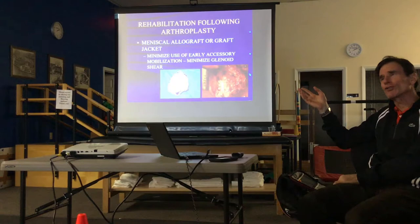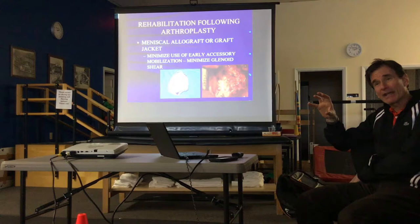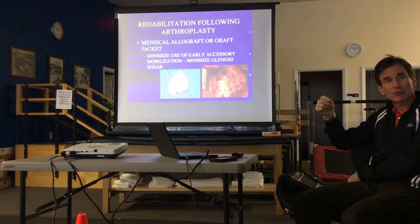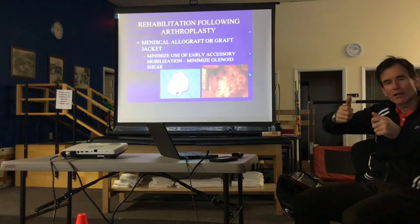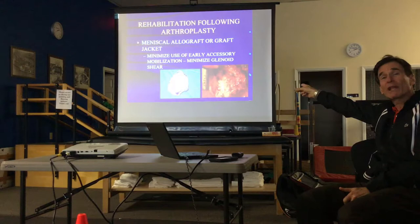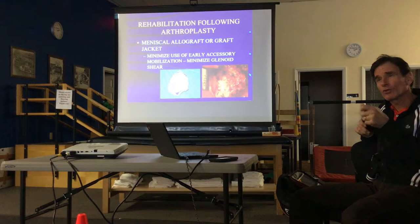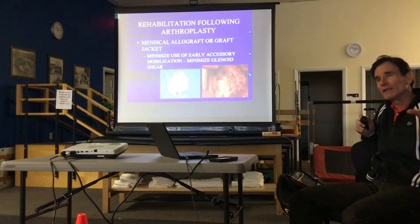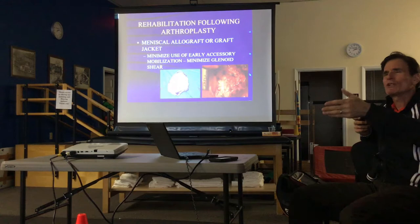Interpositional arthroplasty resurfaces the glenoid using some biological surface — IT band or, in this case, dermal allograft, the same material used for superior capsule reconstruction. Wright Medical's graft jacket comes in a sheet, they trace the glenoid shape, cut it out, and suture it in place. When you know this has been done, avoid translational mobilizations early on — you don't want the humeral head bumping and shearing across the glenoid where the fixation knots are, risking harm to the device.